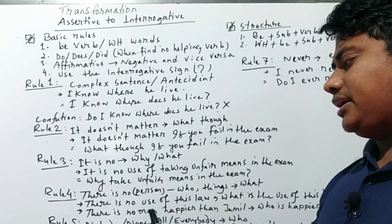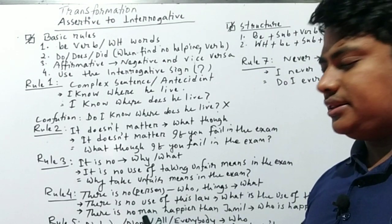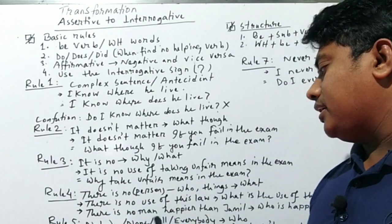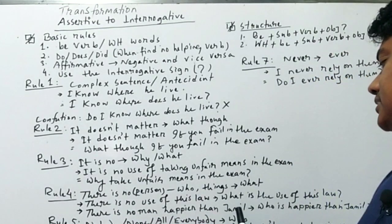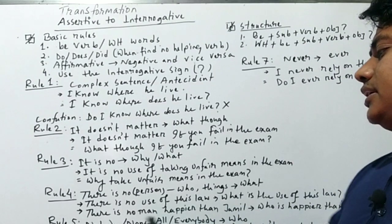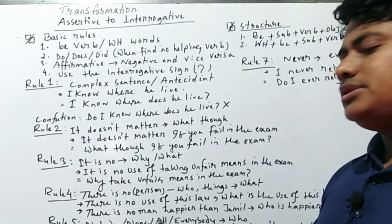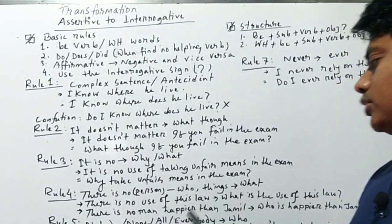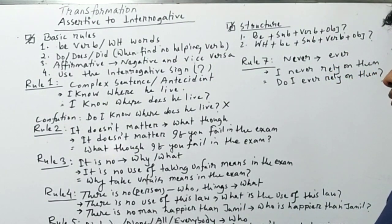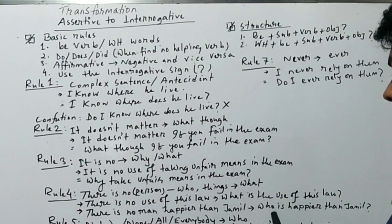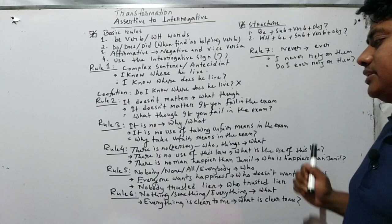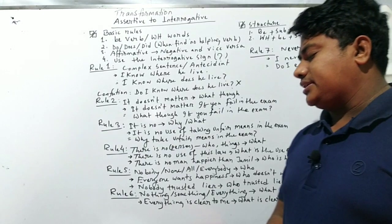Another example: 'There is no man happier than Jamil.' Here 'there is no' indicates a person — 'man' — so we convert 'there is no' into 'who': 'Who is happier than Jamil?' This is the correct answer.